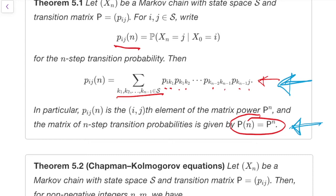So those are the two ways that we can find n-step transition probabilities. Either sum over all paths, or look at a matrix power.